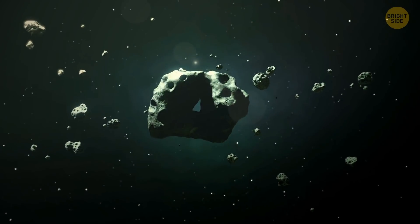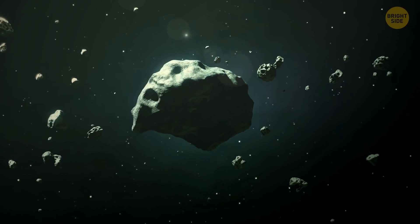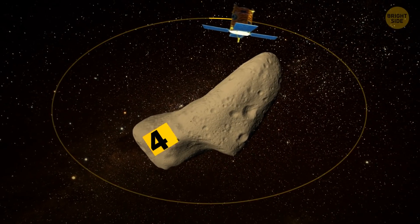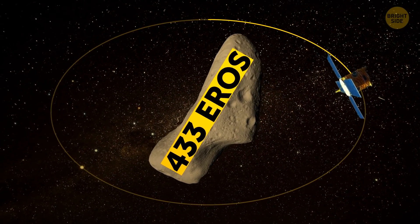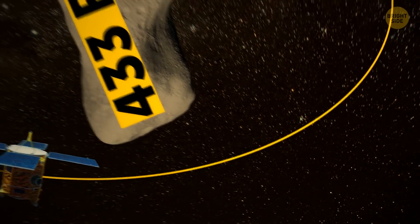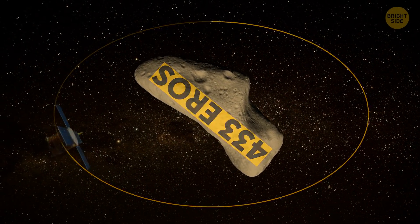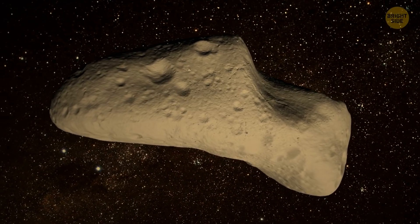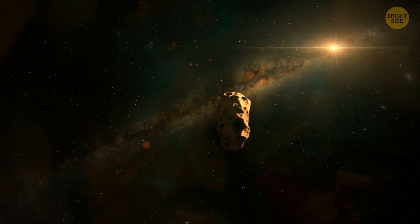Before then, some scientists took asteroids for just some random flying piles. Asteroid 433 Eros is indeed the smallest body in our solar system that got its own spacecraft orbiting it. At first sight, this asteroid seems like any other ordinary rock coming from space.